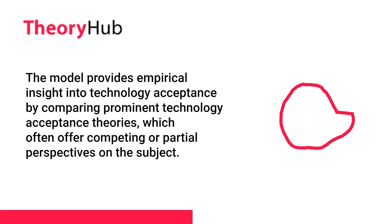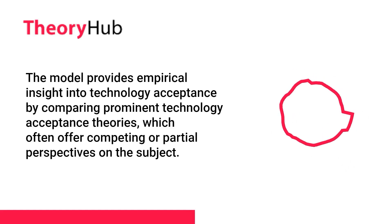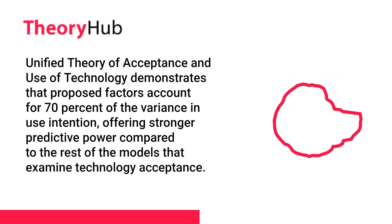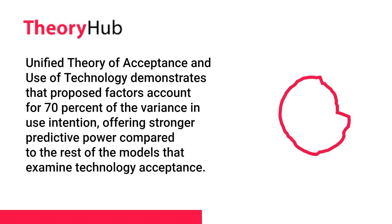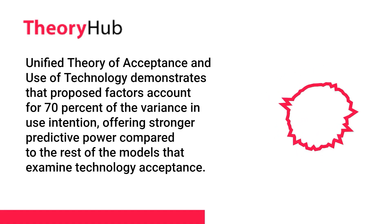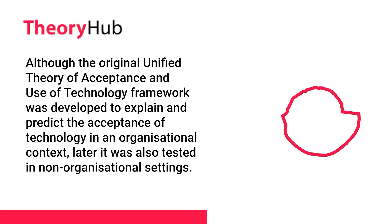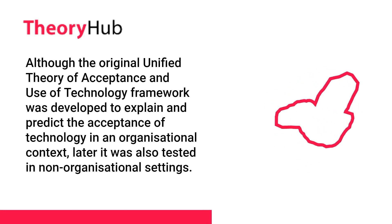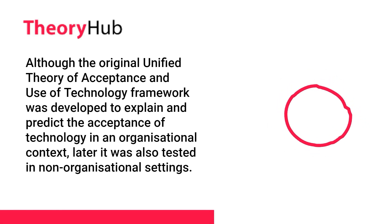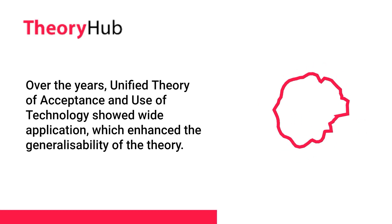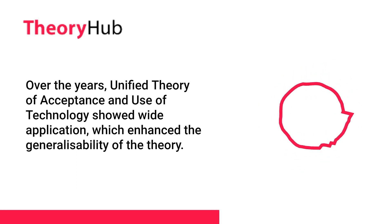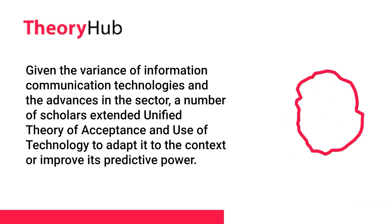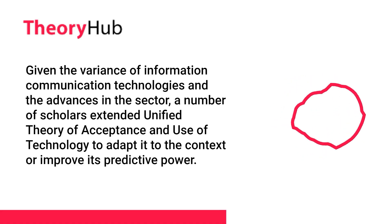The Unified Theory of Acceptance and Use of Technology has made several contributions to the literature. The model provides empirical insight into technology acceptance by comparing prominent technology acceptance theories, which often offer competing or partial perspectives. UTAUT demonstrates that proposed factors account for 70% of the variance in use intention, offering stronger predictive power compared to other models. Although originally developed for organizational contexts, it was later tested in non-organizational settings, showing wide application and enhanced generalizability. Given advances in information and communication technologies, a number of scholars extended UTAUT to adapt it to new contexts or improve its predictive power.